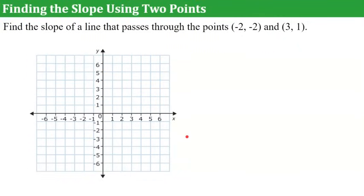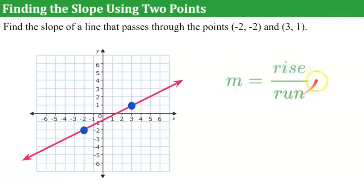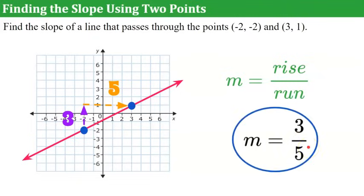Now let's find the slope using two points. Find the slope of a line that passes through the points (-2, -2) and (3, 1). First, plot the ordered pairs: (-2, -2) is left 2 and down 2; (3, 1) is right 3 and up 1. Connect with a line. Starting at the leftmost point, rise 3 and run 5 — slope is 3/5 in simplest form.